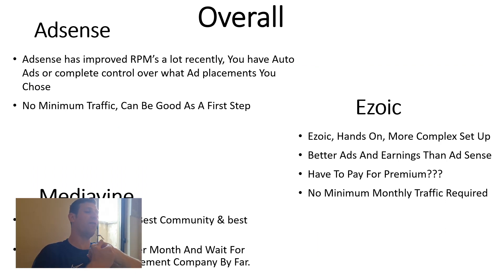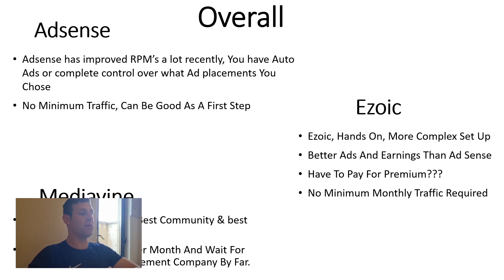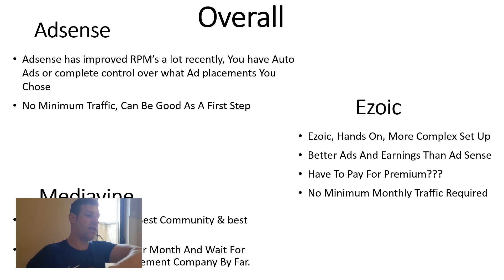Quick recap: AdSense has improved RPMs recently, offers auto ads or full manual control, has no minimum traffic requirement, and is a good first step. Ezoic is hands-on and technically complex, offers better ads and earnings than AdSense, has no minimum traffic requirement, but the paid premium program doesn't make sense for me. Mediavine has the best ads and RPMs by far, the best community and dashboard, but needs 50,000 sessions per month, requires a wait for approval, and payment is net 60 days. They are the best ad management company by far.